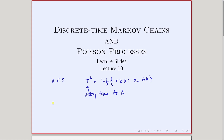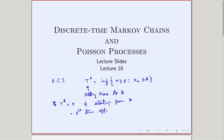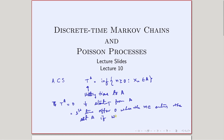T_A will be 0 if starting from A, and it is basically the first time after 0 when the Markov chain enters the state A, if we are starting outside A.